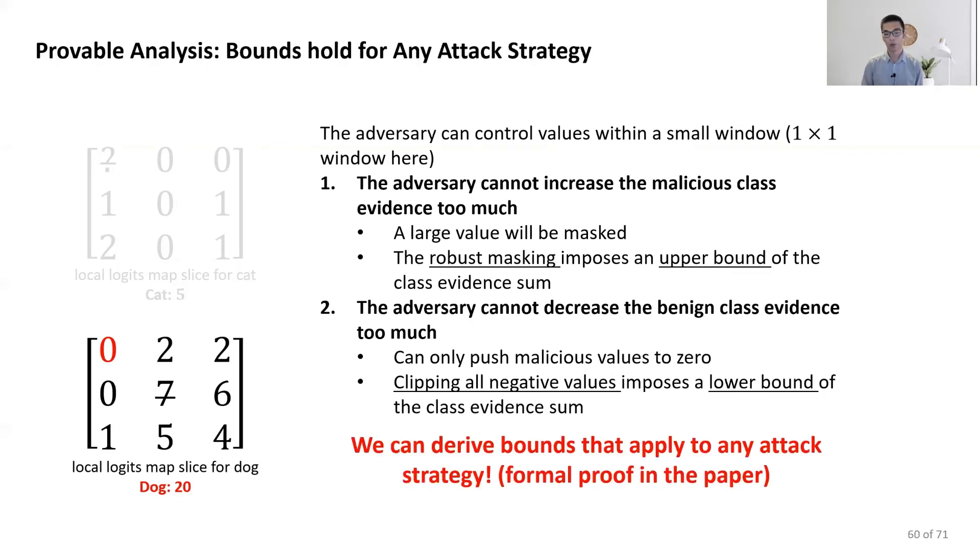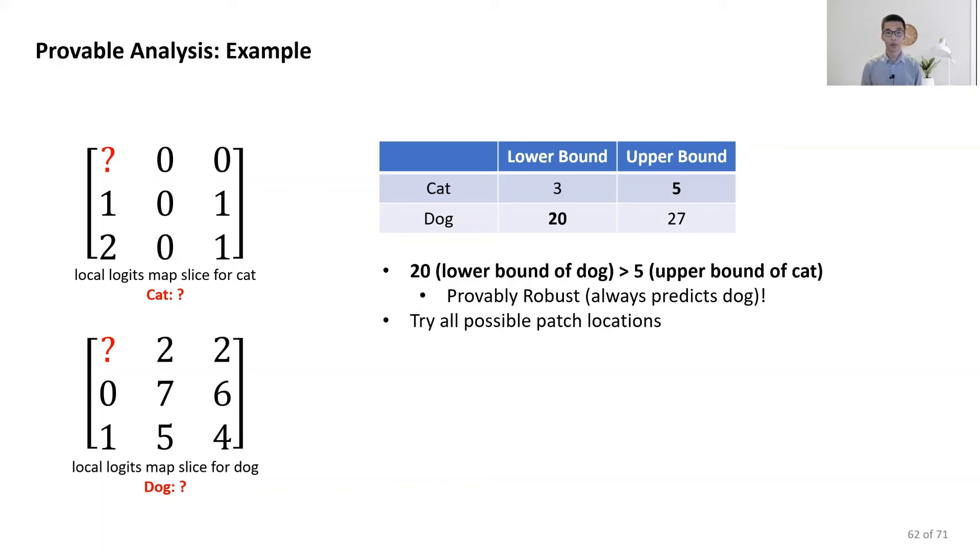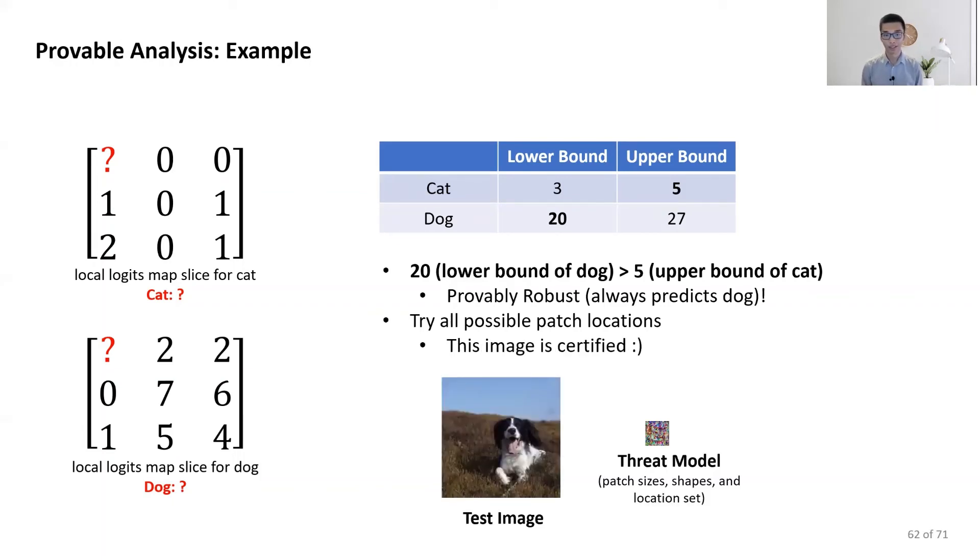In our paper, we can formally show that we have bounds that apply for any attack strategy. Then, with these theoretical results, going back to this example, we can calculate the lower bound and upper bound for every class. Here, we find the lower bound of the dog is larger than the upper bound of any other class. Then, we can say the prediction is always correct as dog, provably robust. Then, if we try all possible patch locations in the threat model and the same argument holds, we can say this image is certified. That is our provable robustness.